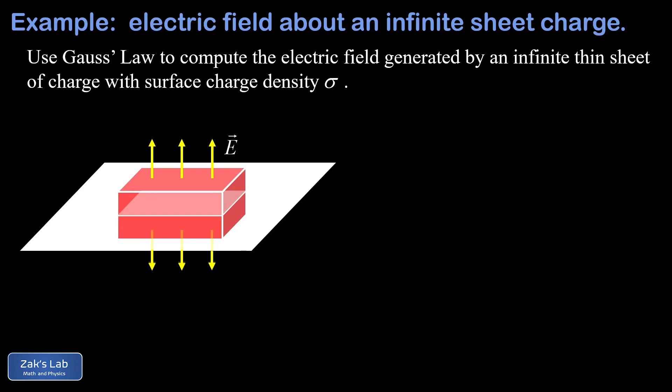Because our electric field must point exactly straight up above the sheet and straight down below the sheet, we're guaranteed to have an electric field that's perpendicular to that top and bottom surface. We know this electric field has to be perfectly straight up if the sheet is horizontal because it's literally infinite, which means there's no way to bias the electric field to the left or the right.